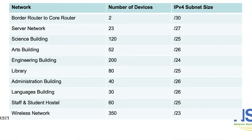The administration building has 40 devices which will also use a /26. The languages building has 30 devices which will need a prefix of /26, which is also going to give you 64 IP addresses. The question here is: if we need 30 devices on the network, why are we allocating a /26? Remember that if we allocate a /27 we will have 32 IP addresses and two of them are not usable, so you'll only have 30 IP addresses available. That means for the languages building you will not be able to add any single device if you use a /27 prefix. This is the reason why a bigger prefix is allocated for the languages building.